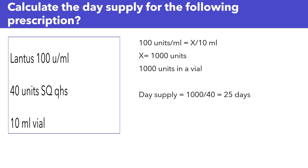By dispensing a 10 ml vial, you're dispensing 1,000 units of insulin. How many units are you taking every day per this prescription? It's 40 units every day at bedtime. So you're dispensing 1,000 units total and taking 40 units a day. To calculate the day supply — how many days this is going to last — it's 1,000 divided by 40, and your day supply is 25.